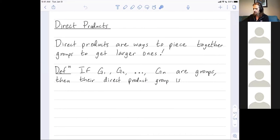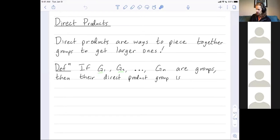Let me give the definition and then we'll do some examples. Pretend I have n different groups G1, G2, G3, all the way up to Gn. Their direct product group is denoted G1 × G2 × ... × Gn.